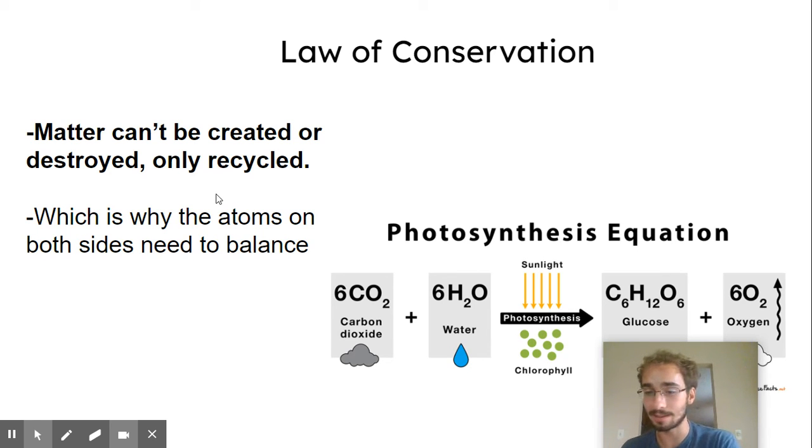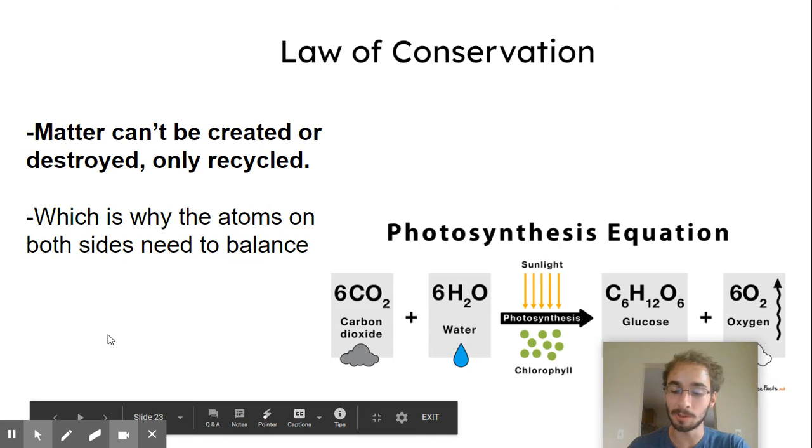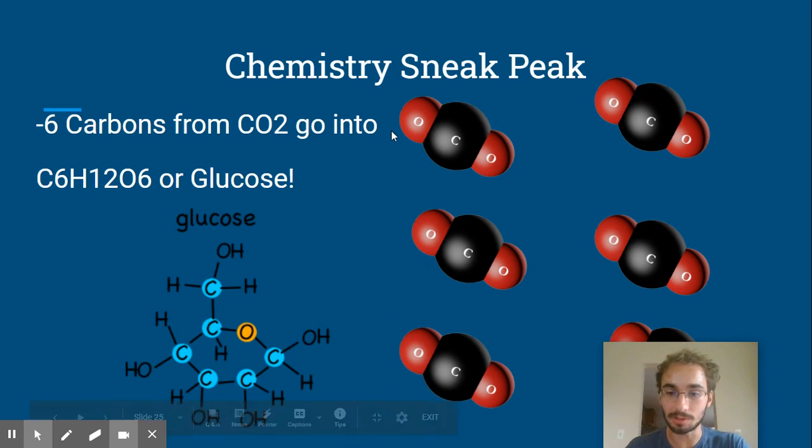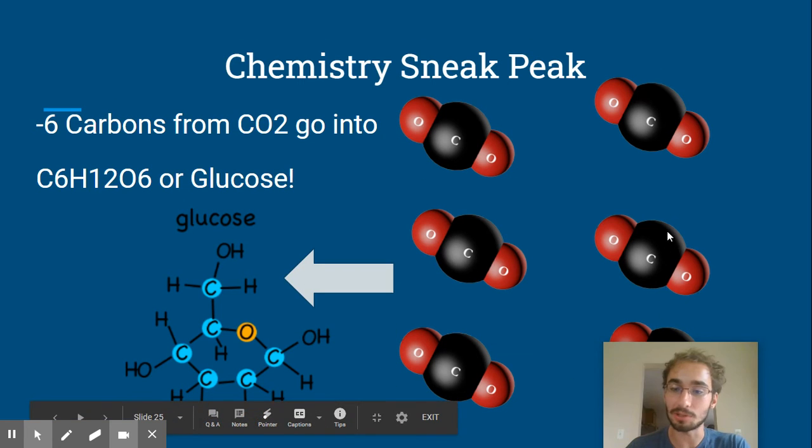So it's all about balance. That's why you have the numbers, to show that six carbon dioxide they go into glucose. That's why you have to have it balanced, because you should know that six carbon all go into that glucose.